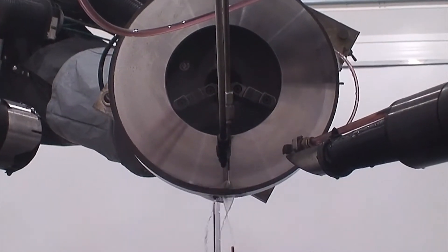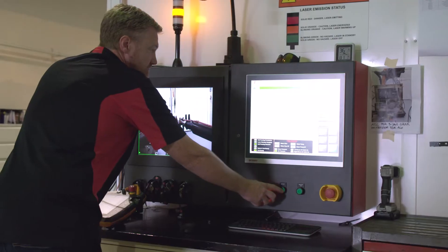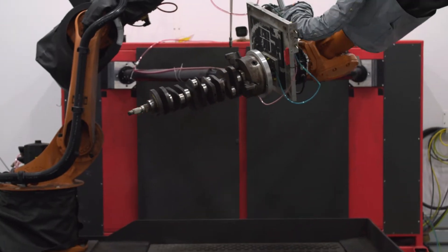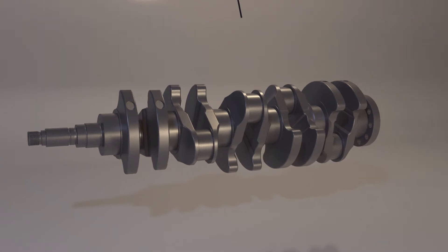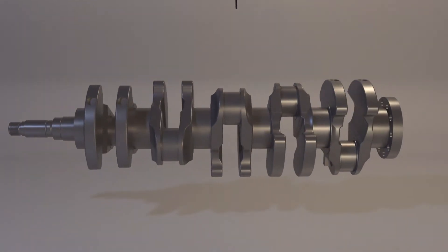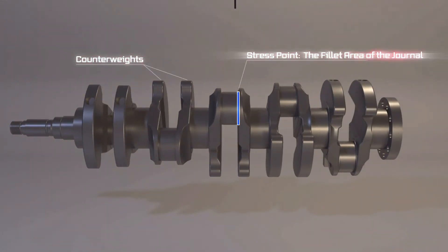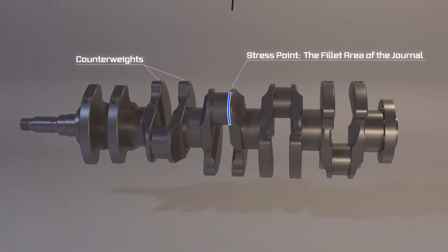Here is an example of how the Prokudo laser peening system protects against cracking and breakdowns in a key engine part, the crankshaft. Mounted on the robot, the part is in position.